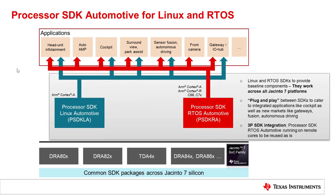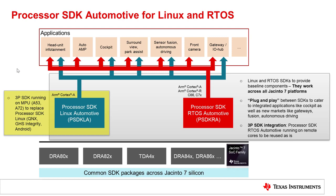Together, the Linux and RTOS SDK provide all the baseline software needed to access various hardware features on Jacinto 7. This allows you to focus on your specific application without having to understand all the low-level details of the SoC and software. Additionally, on the ARM Cortex-A72, you can replace Linux with a third-party OS like QNX or Green Hills Integrity OS.